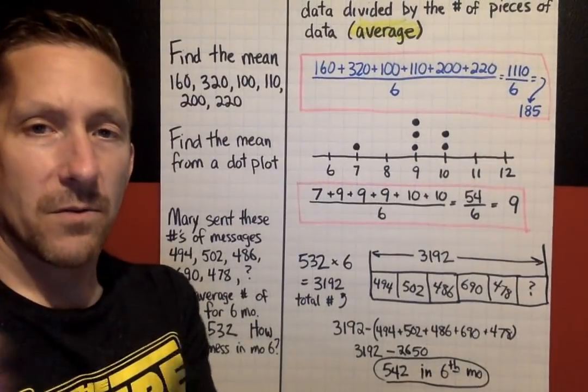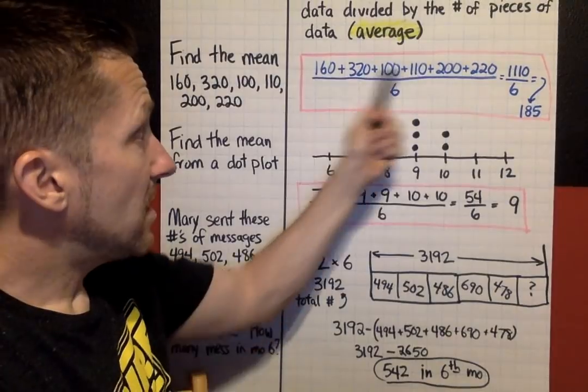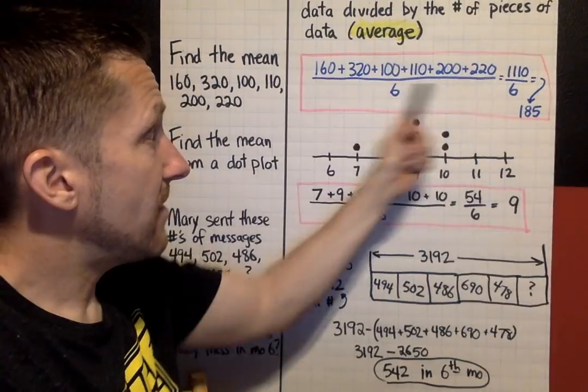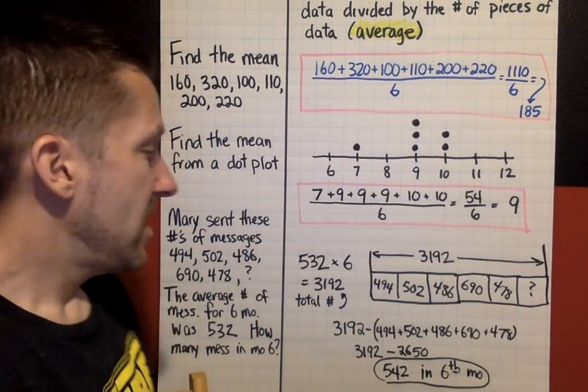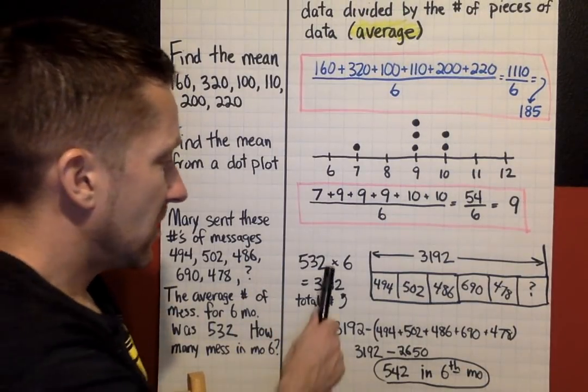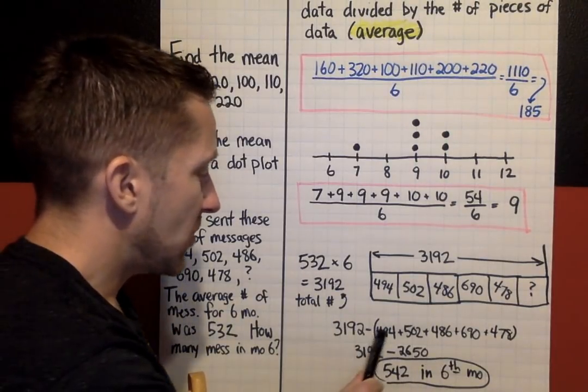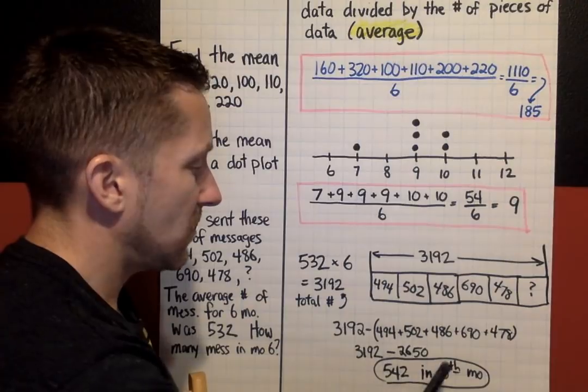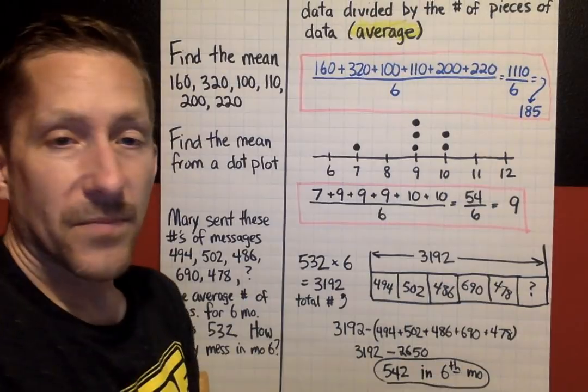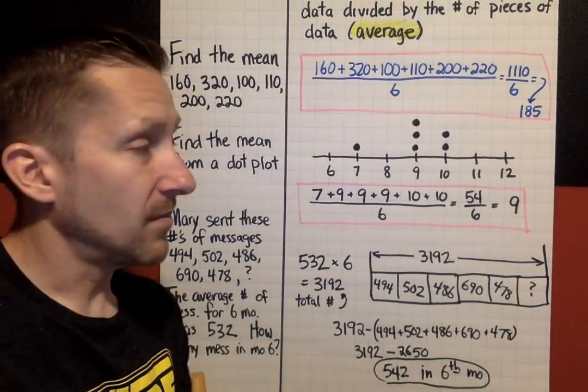Those are the types of problems you're going to be working on today. Finding the mean. If it just says find the mean directly, you're going to add all your data values, divide by how many data values you have. If you have a missing data value, this is going to be your strategy. You're going to work backwards to get the overall total, and then subtract all the other values put together from the total will give you a missing data value. That is Chapter 11, Lesson 1. I'll be back soon for Lesson 2.